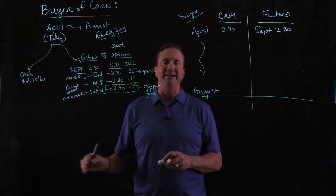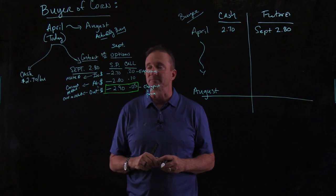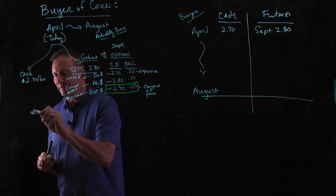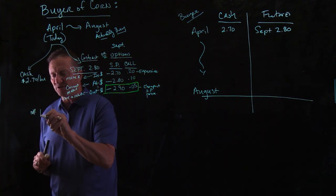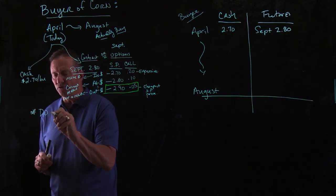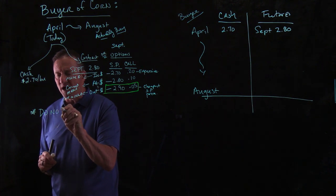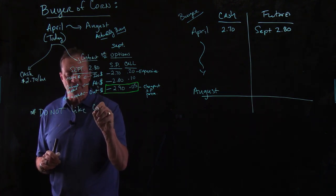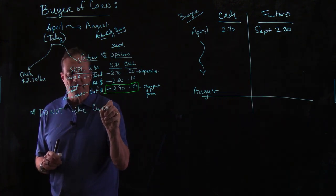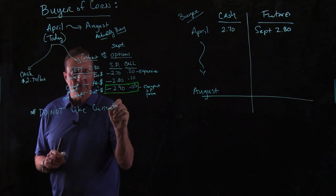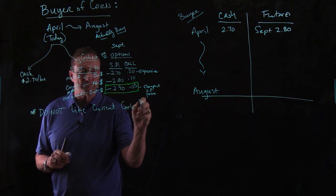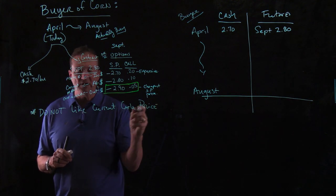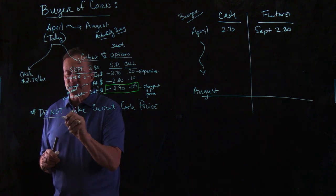If you're taking notes, put this futures market hedge kind of out of the way — this is your beginning information. And then we're going to have the ending information. But here's something very important: on the beginning information, we do not like the current cash price.